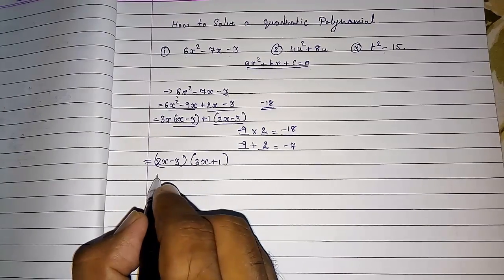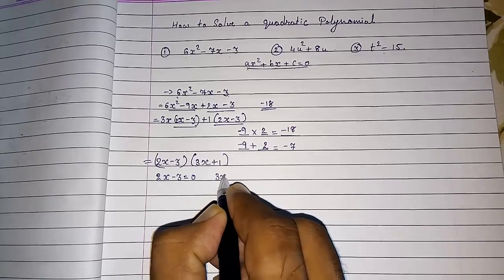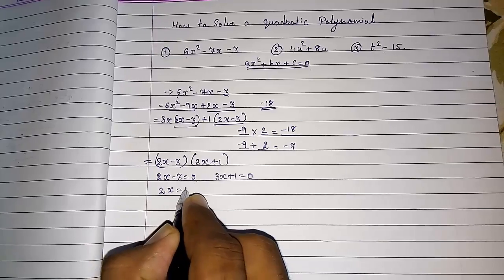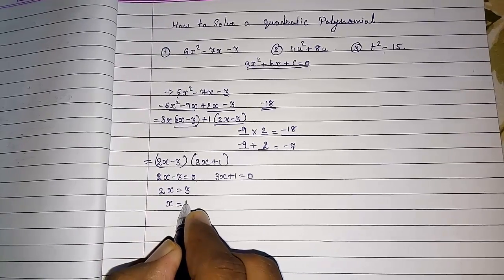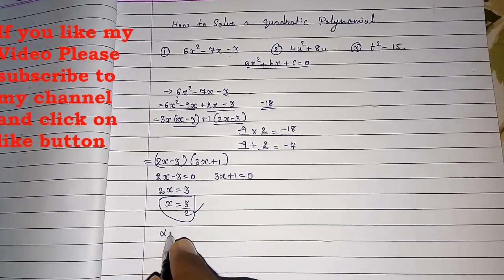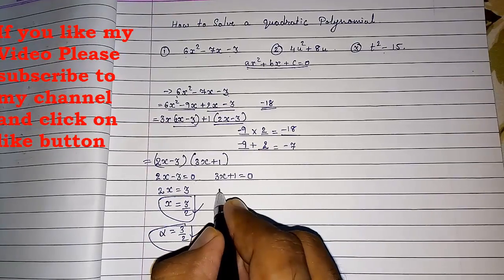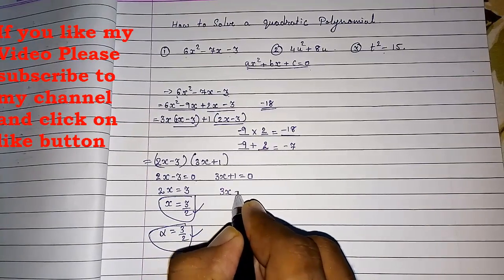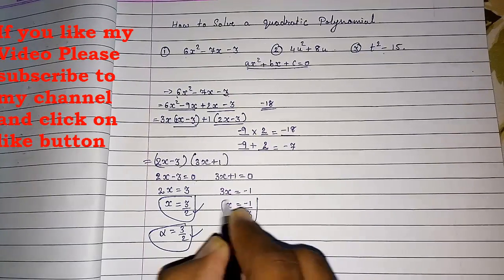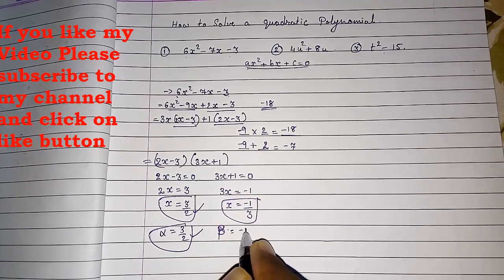To find the zeros, we set each factor to zero: 2x - 3 = 0 gives x = 3/2, which is our first zero α = 3/2. From 3x + 1 = 0 we get x = -1/3, so β = -1/3. These are the two zeros.